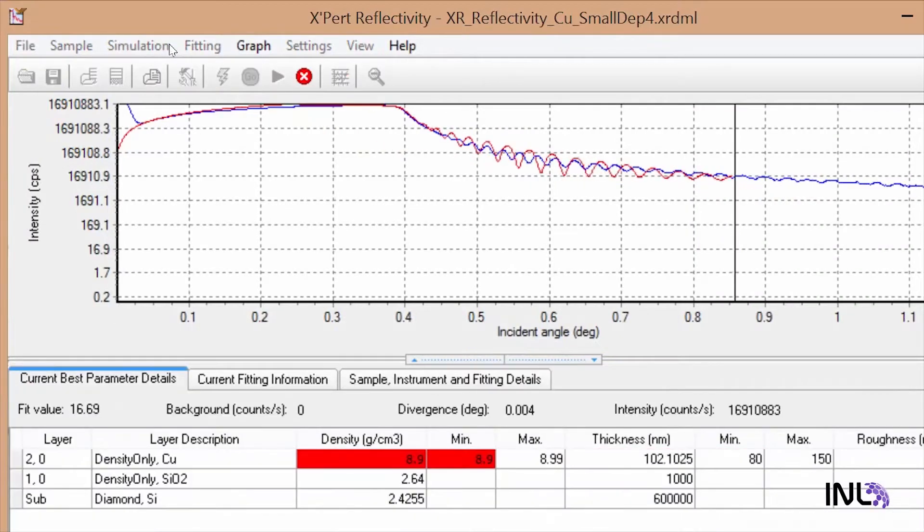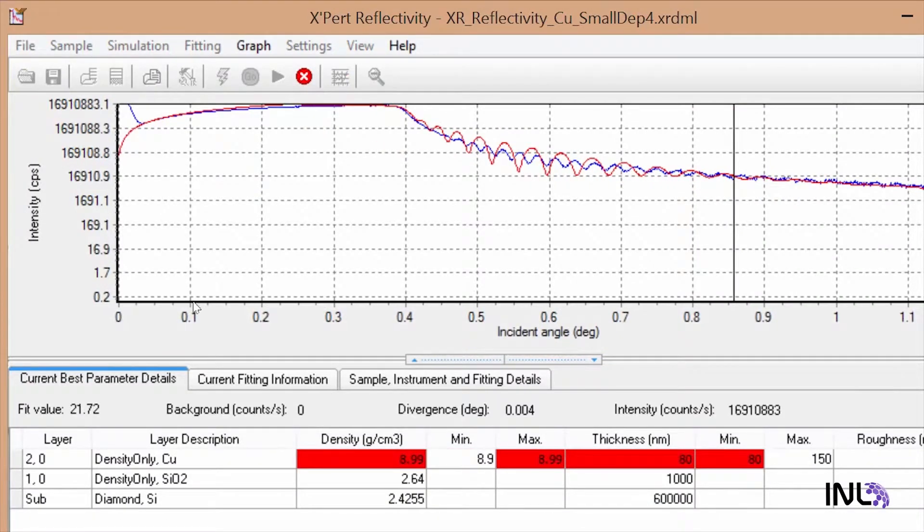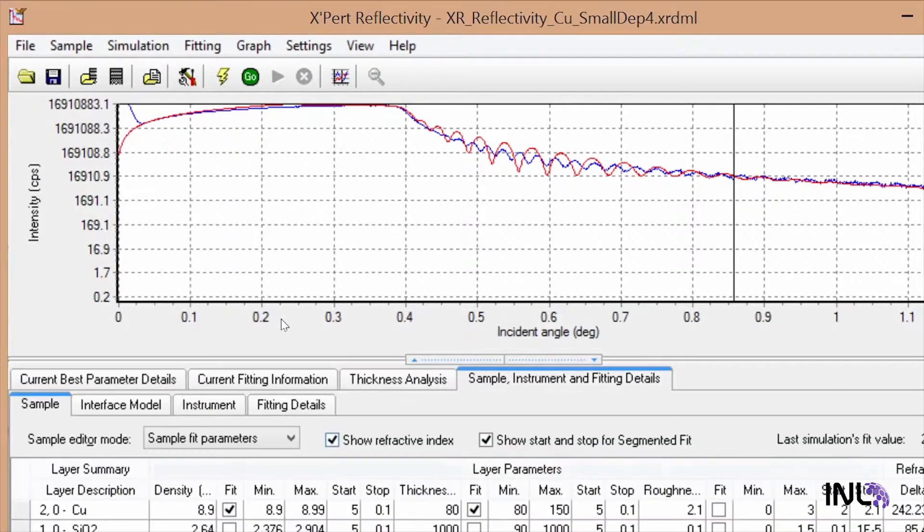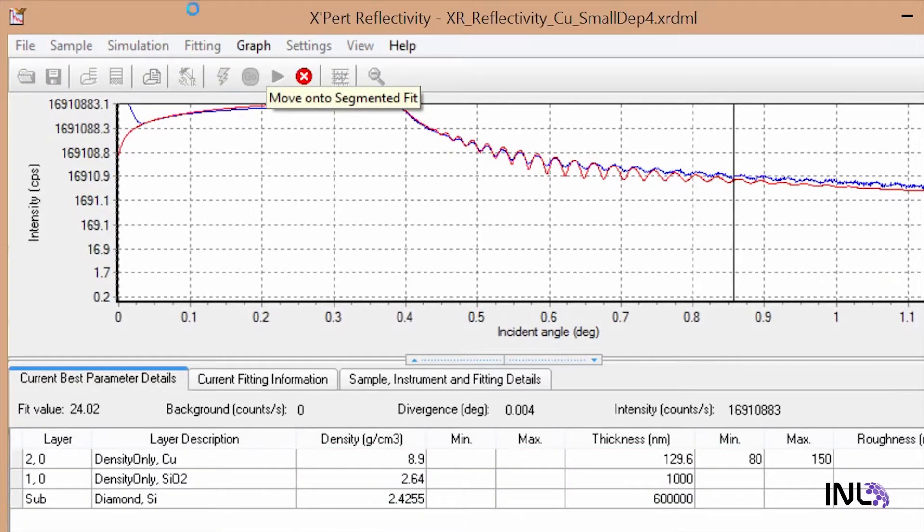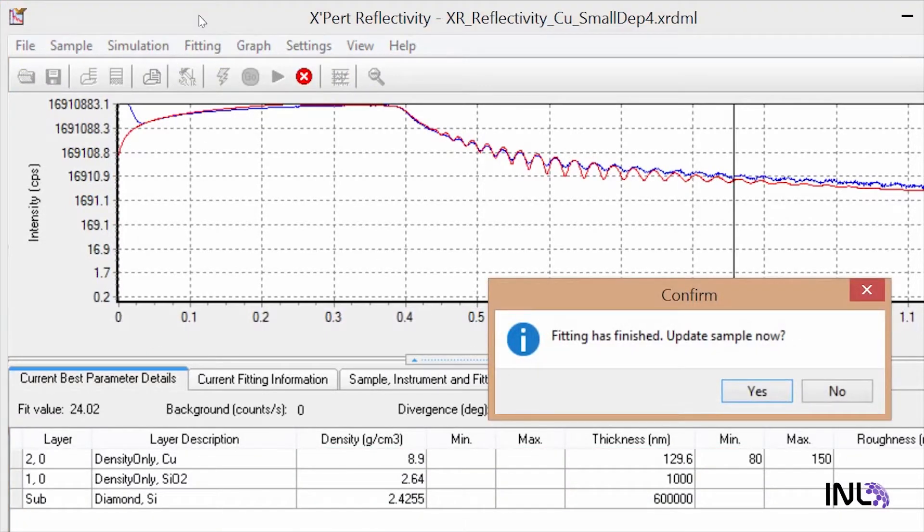The software analyzes the pattern of the reflected X-rays, typically a curved line with periodic bumps. The positions of the bumps and the shape of the line are used by the software to calculate the thickness and quality of the metal layers. This information helps to optimize the process for making the layers.